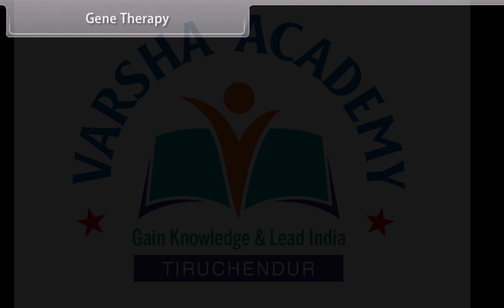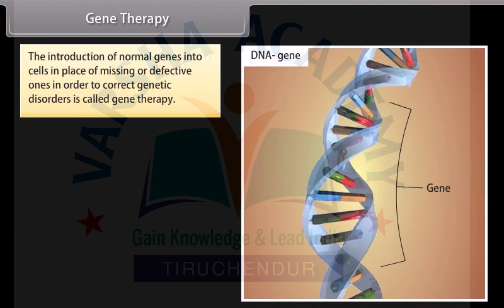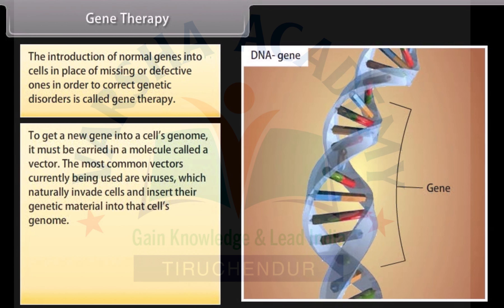Gene therapy: The introduction of normal genes into cells in place of missing or defective ones in order to correct genetic disorders is called gene therapy. To get a new gene into a cell's genome, it must be carried in a molecule called a vector. The most common vectors currently being used are viruses, which naturally invade cells and insert their genetic material into that cell's genome.